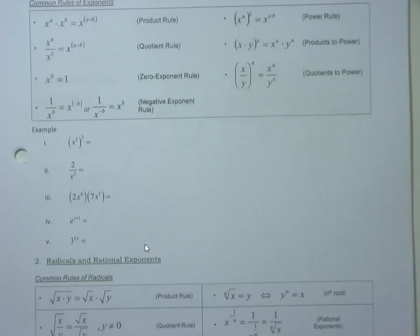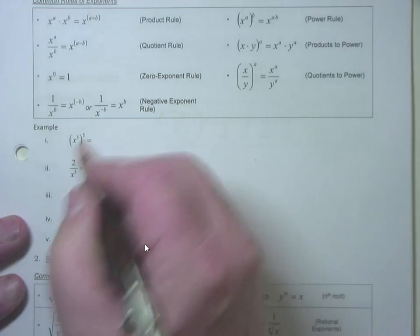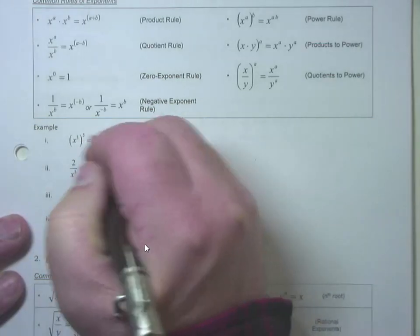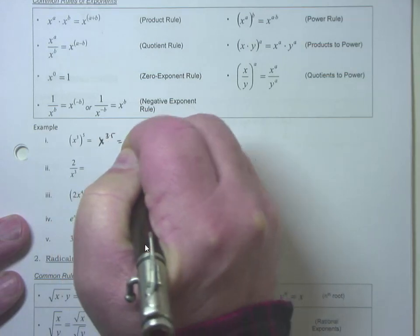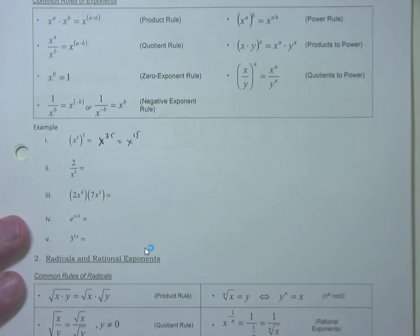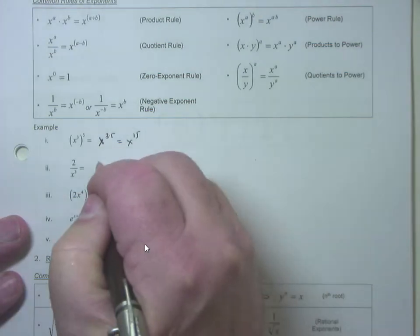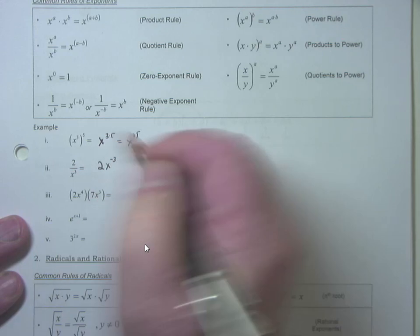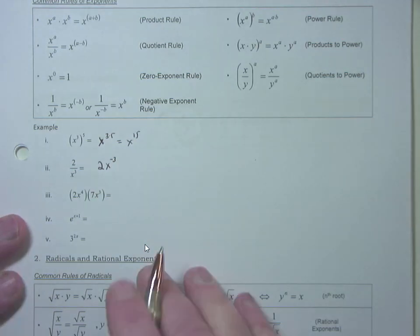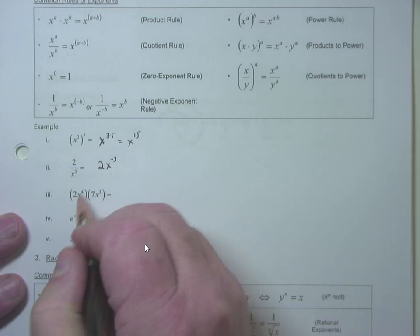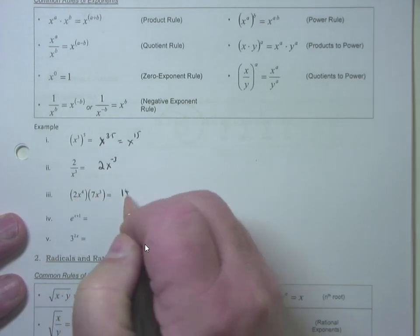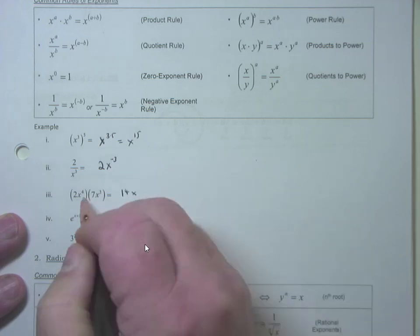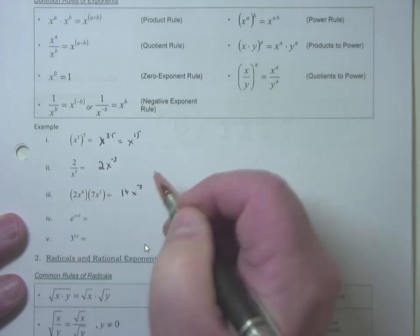A quick algebra review: x cubed to the fifth power — power to a power, you multiply — that's x to the 15th. Stuff on the bottom you clean up: that'll be 2x to the negative 3. When you multiply, multiply your constants: 2x to the 4th times 7x cubed is 2 times 7 equals 14, then x to the 4th times x cubed — add exponents — 4 plus 3 is 7, so it's 14x to the 7th.